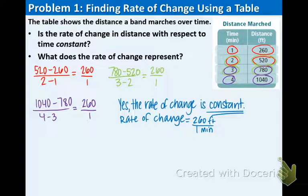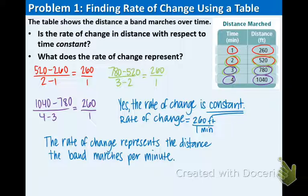The second question asks, what does the rate of change represent? Take a look at the table once more. The rate of change represents the distance the band marches per minute—we have feet on top and 1 minute on the bottom. Remember, that's called a unit rate when the denominator is 1. That completes Example 1, a real-life application problem.